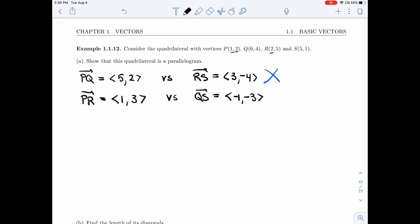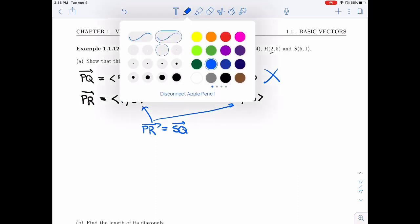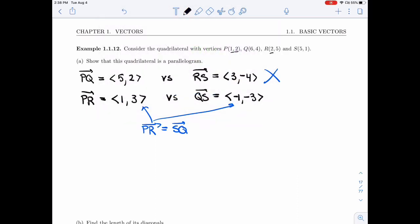If you had gotten what I got, it would not have been a parallelogram. But these two, although they're not equal, they're opposite. So that means that PR is not equal to QS. It's equal to SQ. And that's fine. So if I were to draw my parallelogram, I'd have PR as one of the sides. And the other side that's parallel to it, I'd have to put S on here and Q here.